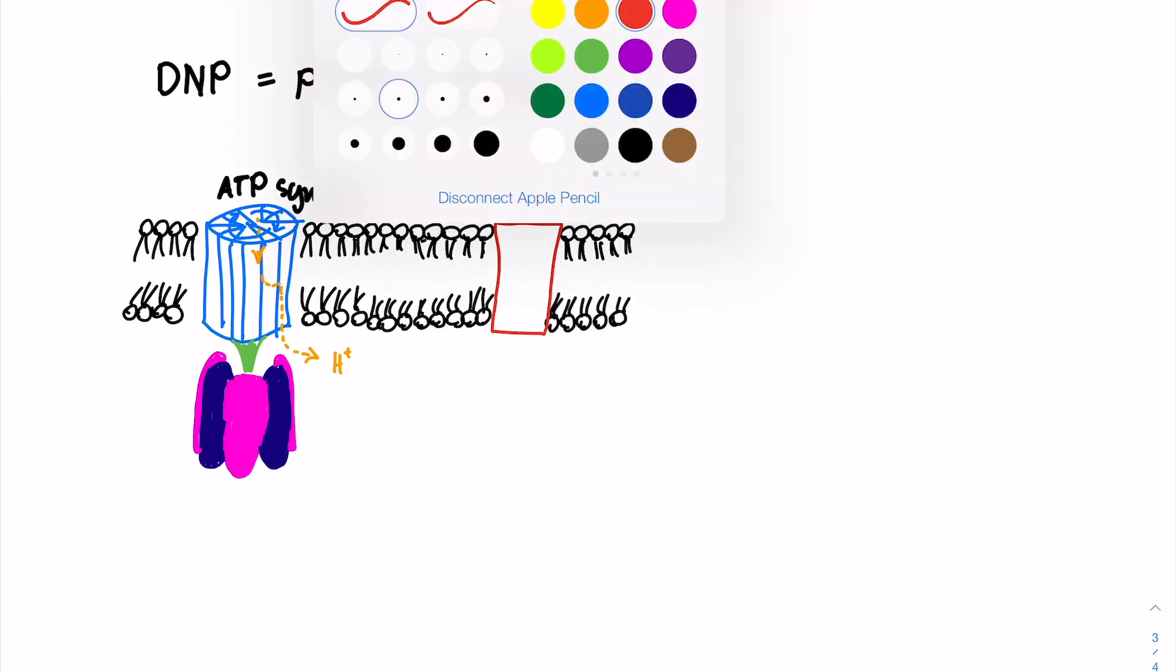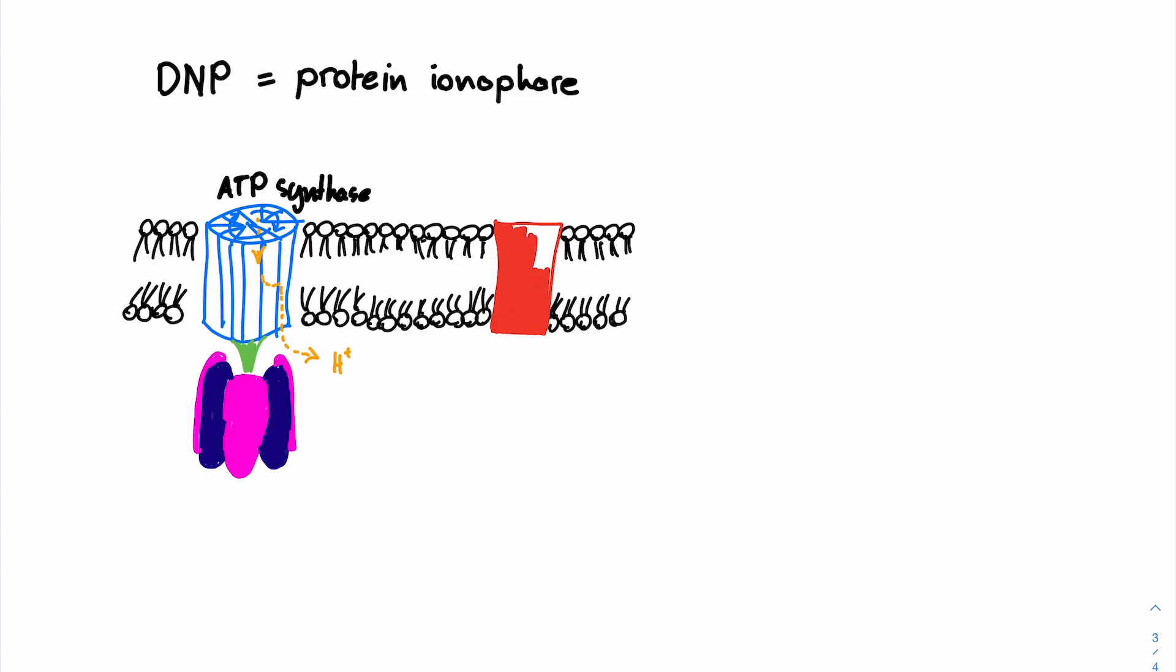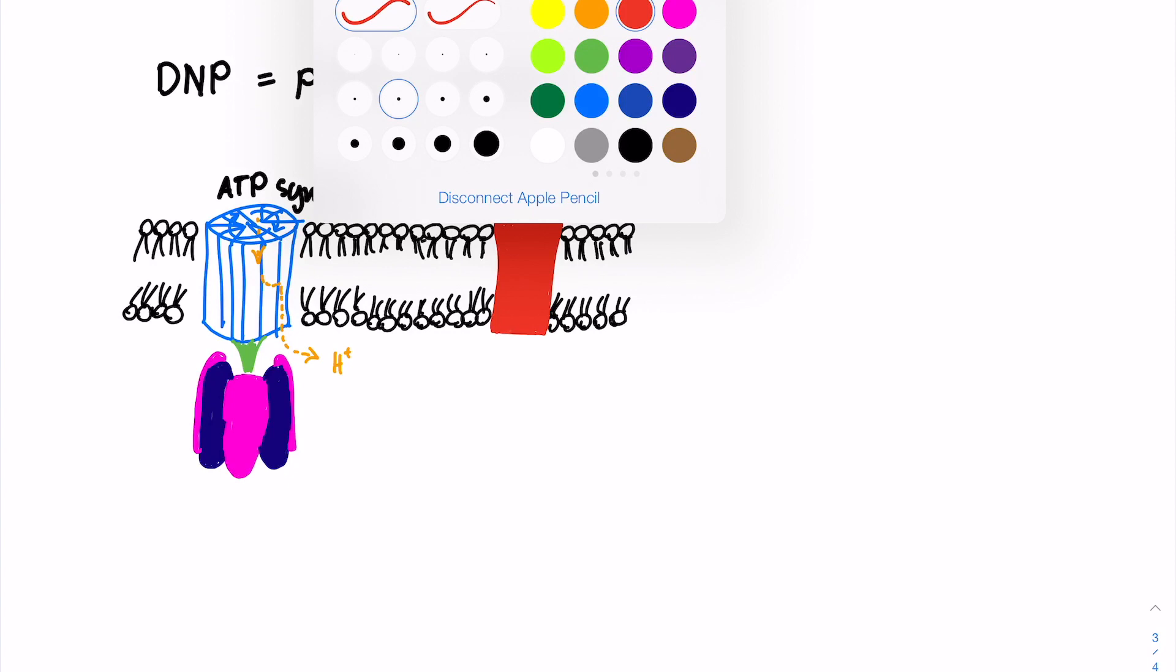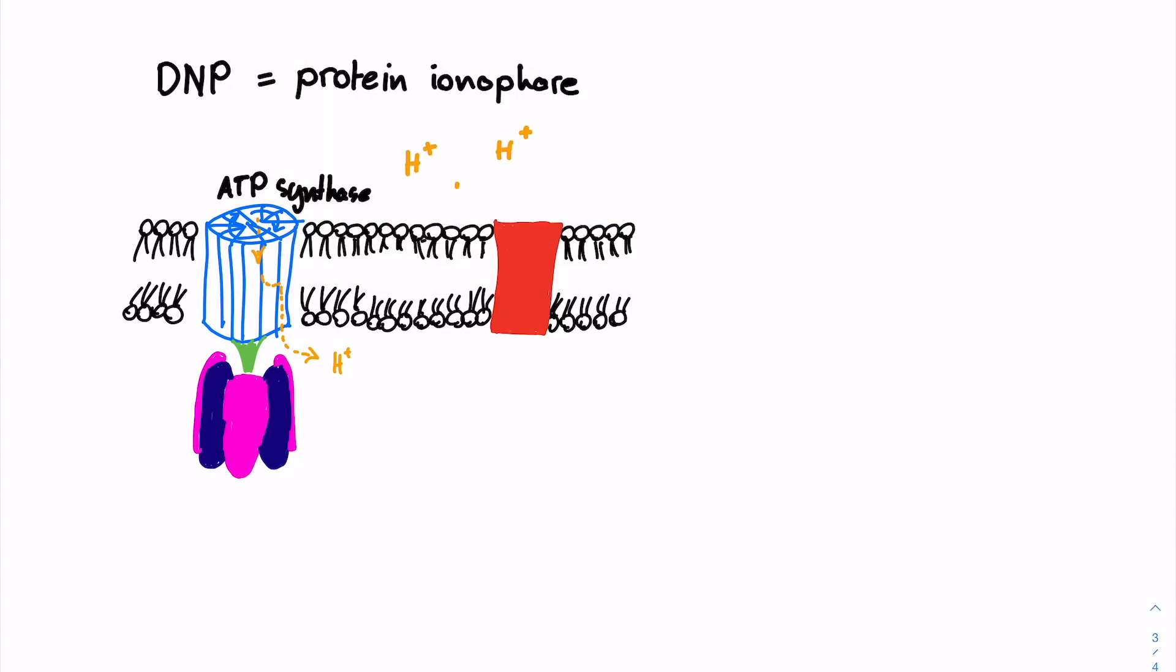So it will allow this very valuable proton gradient that the electron transport chain has worked so hard to create, and the ATP synthase complex so desperately needs, to dissipate. It is as if another complex has been added next to the ATP synthase that also allows the protons to move back from the mitochondrial matrix, but without yielding any ATP. This makes the process of oxidative phosphorylation extremely inefficient, and is commonly referred to as uncoupled oxidative phosphorylation.